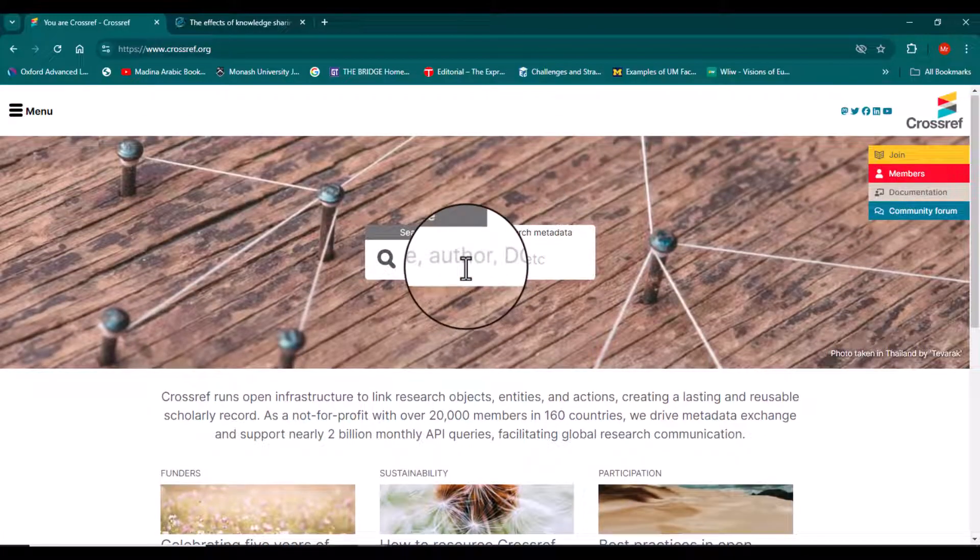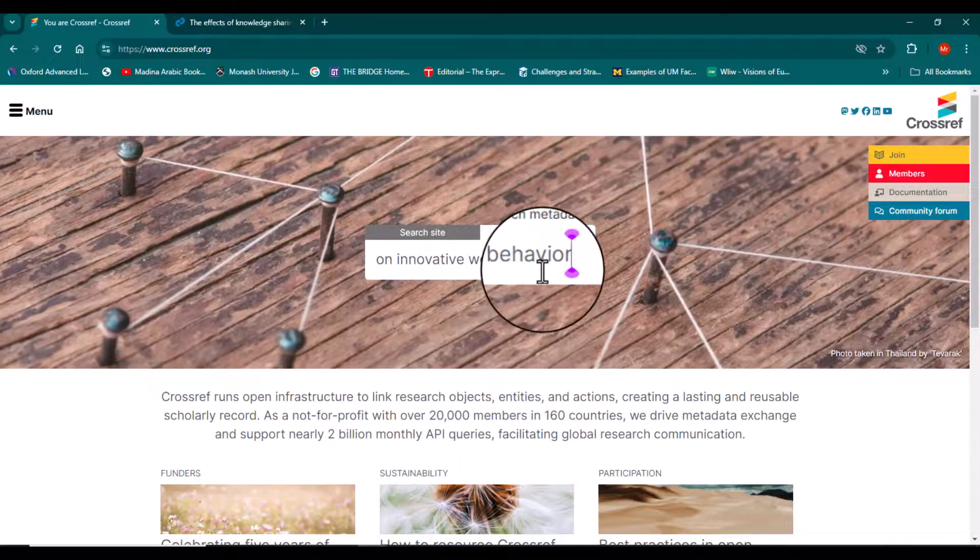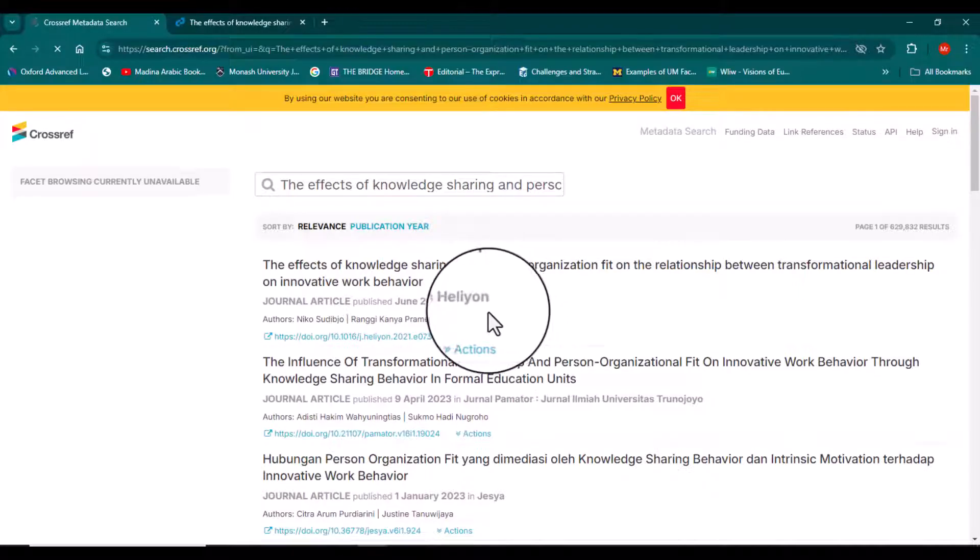Here you can write the title of the article, you can write down the details of the author, and even the DOI number to trace out a specific article. Let's simply paste the title of your article and search. See, this is the article for which we were searching the DOI number.